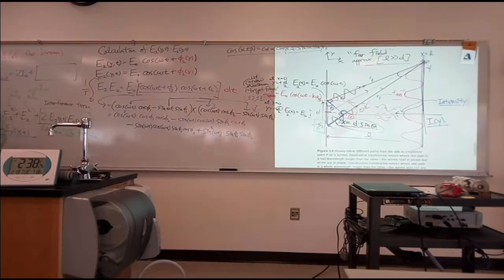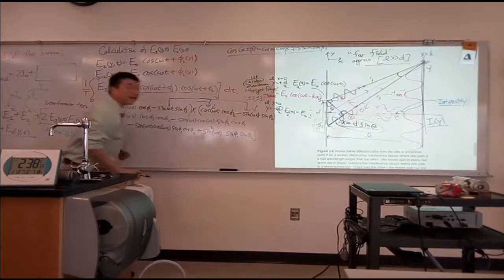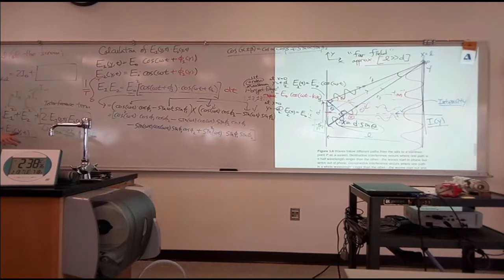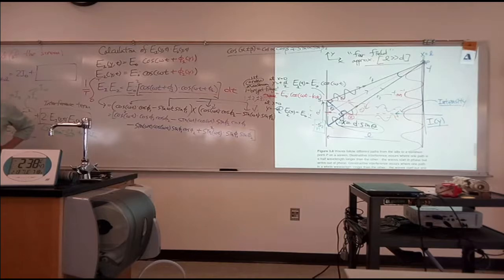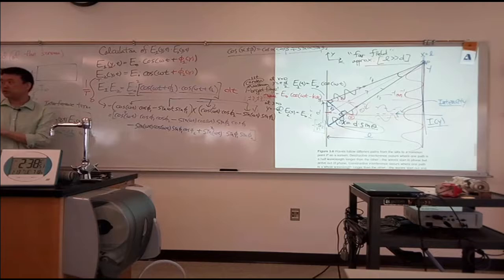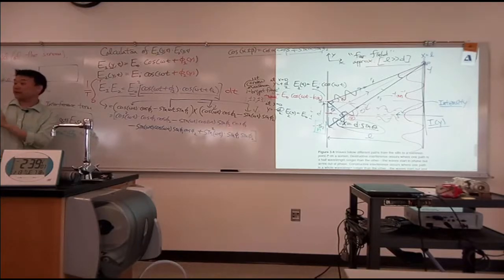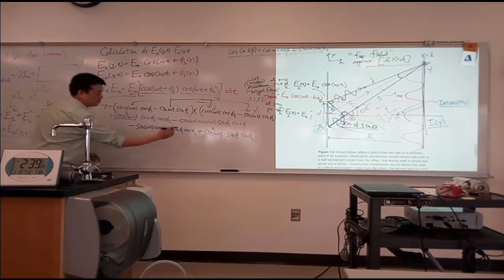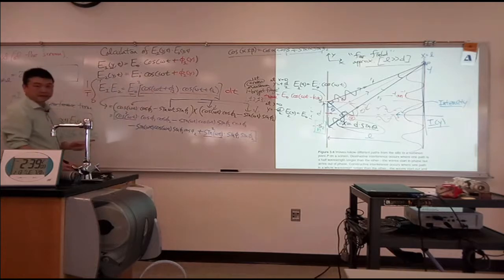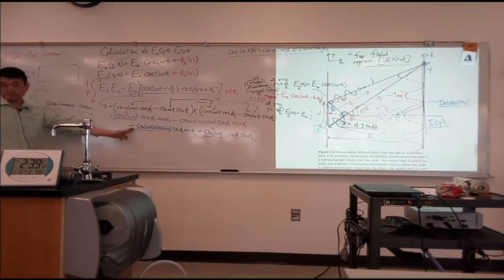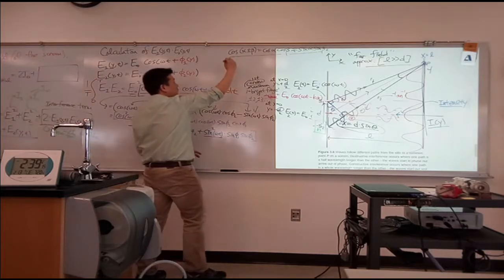Do people see simplifications? I have to do the time average. I want to use your knowledge about time averages of these three types of expressions over one cycle: the time average of cosine squared omega-t, the time average of sine squared omega-t, and the time average of sine omega-t times cosine omega-t. Let me quickly derive these three formulas.